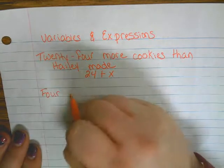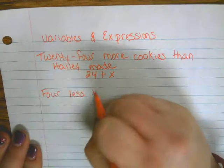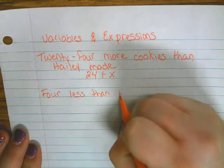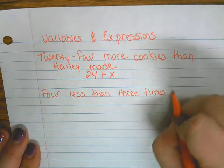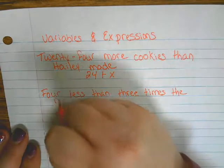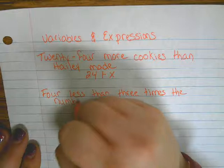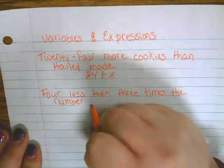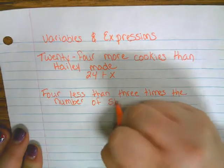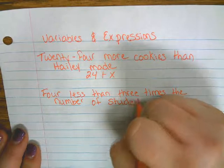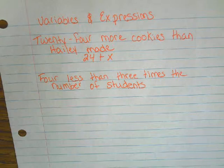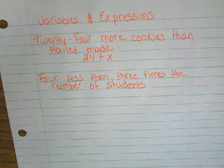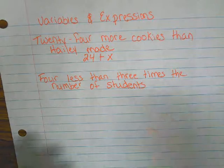Four less than three times the number of students. So four less than three times the number of students. So four minus s? Three n minus four. Three n minus four, good. Three n minus four.